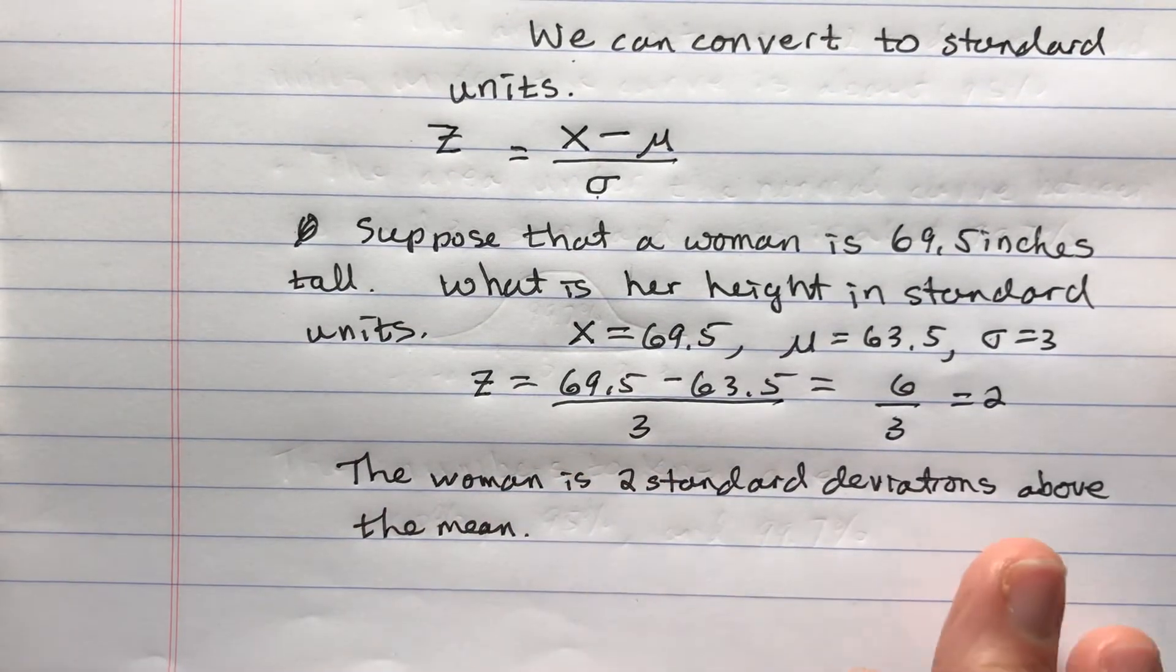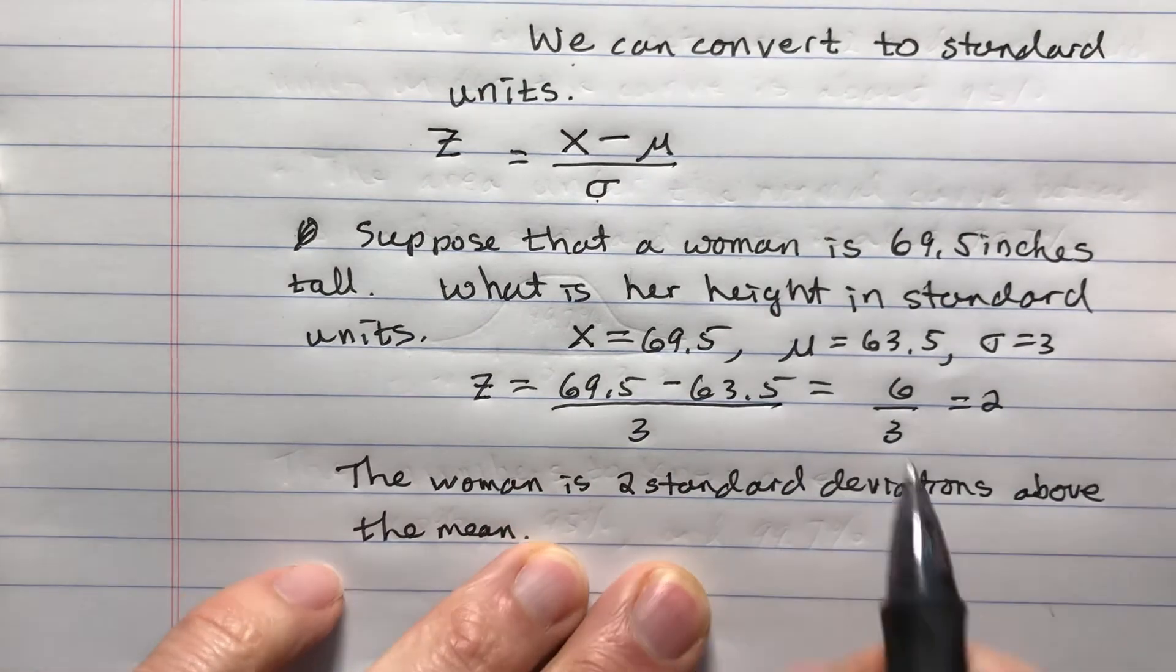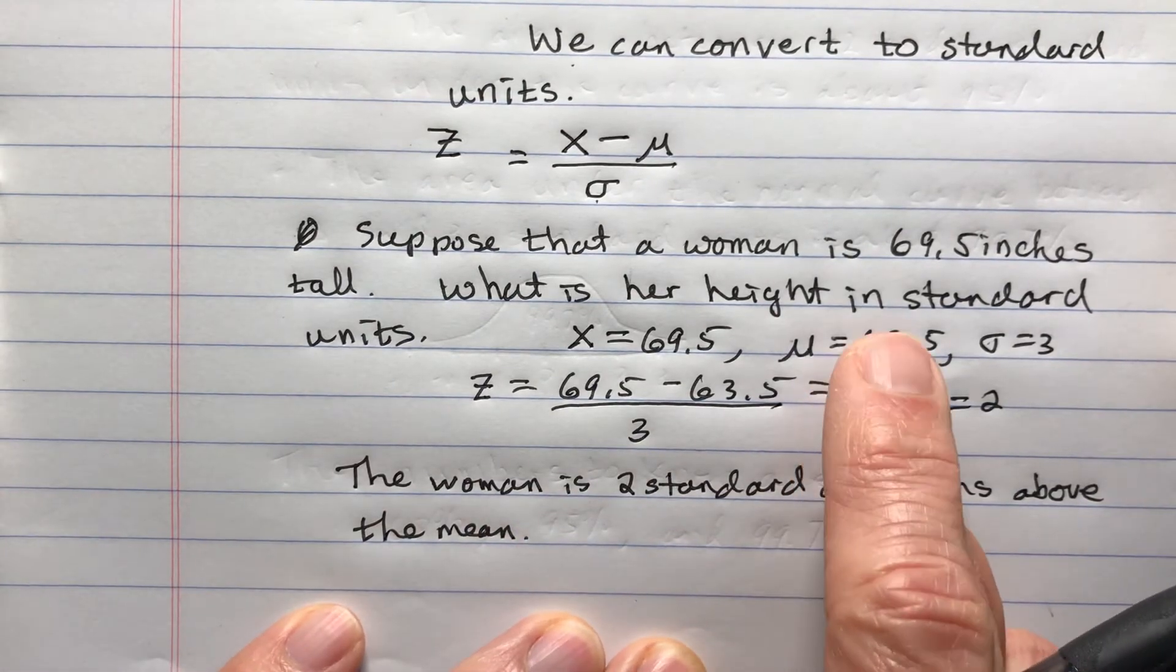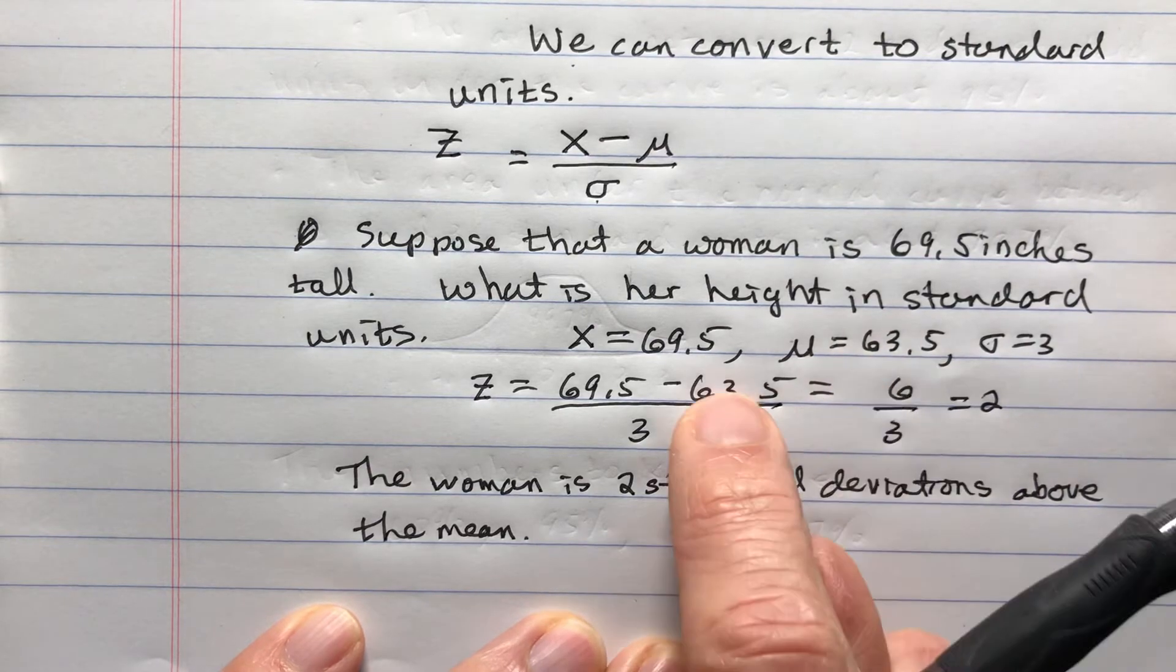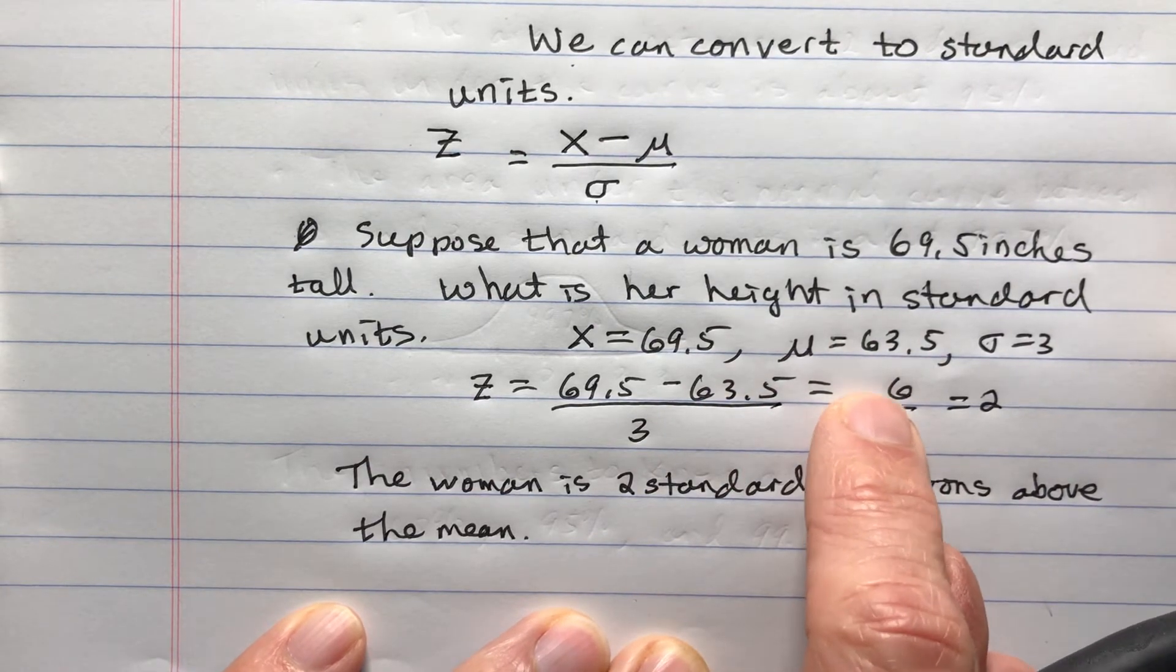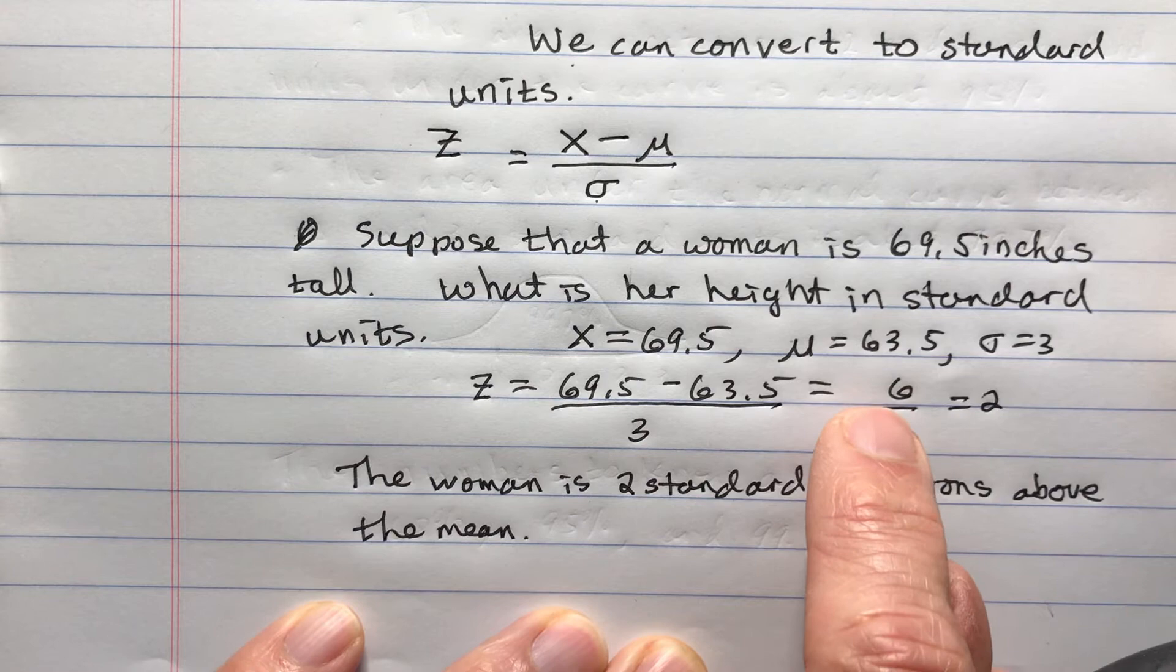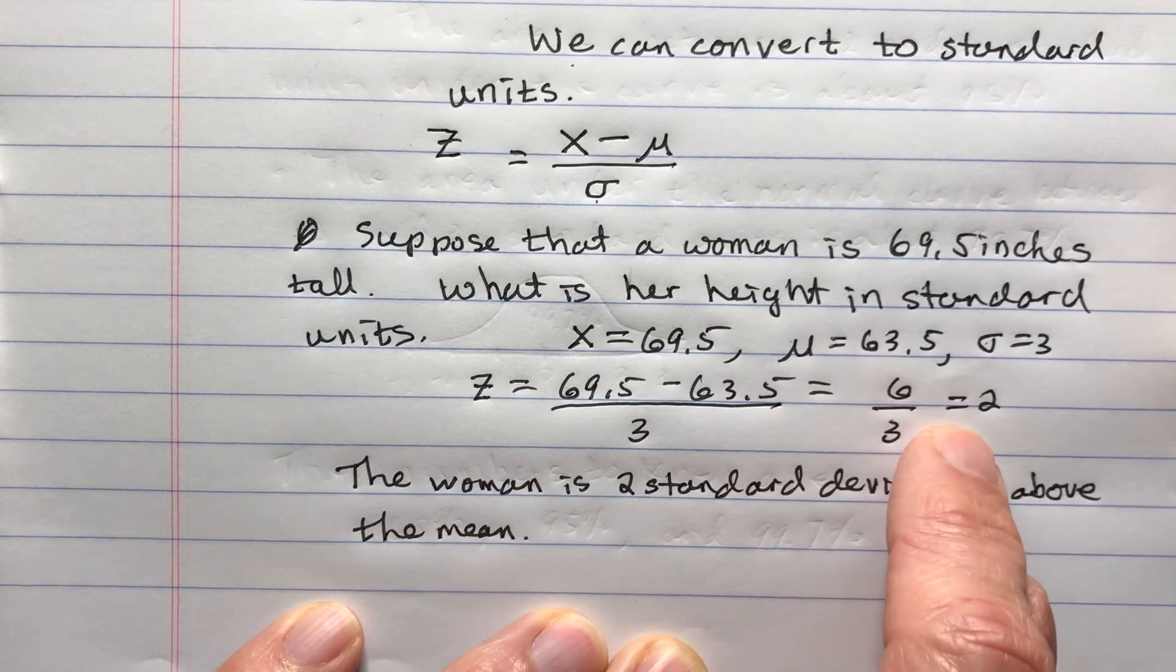It's related to what I know. That's what I'm doing here. The average is 63.5, so it's 6 inches above the average. You might say, well, is that a lot? Well, that's 2 standard deviations.